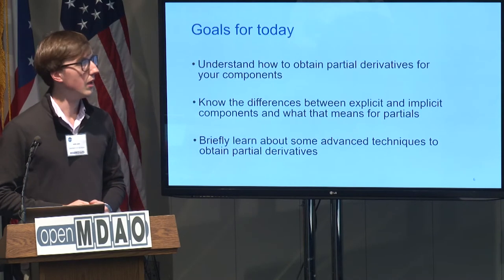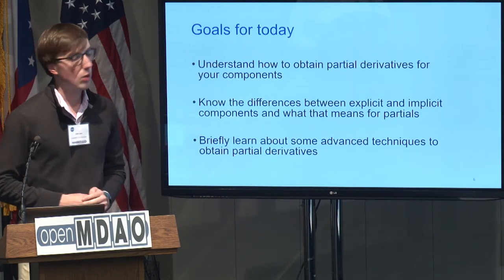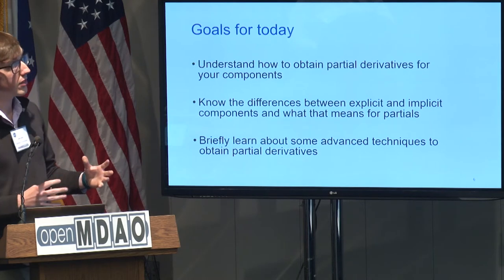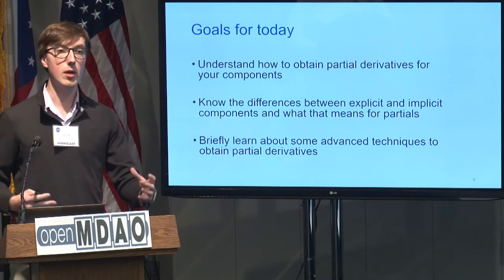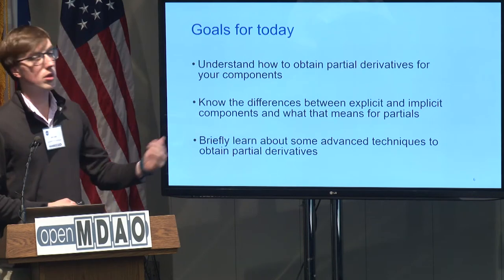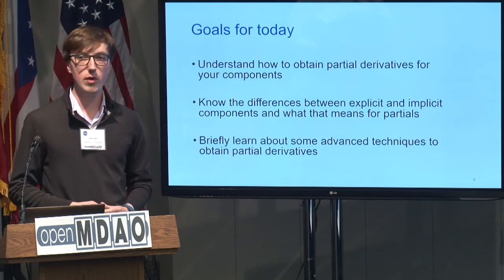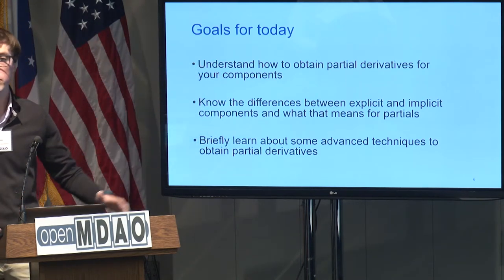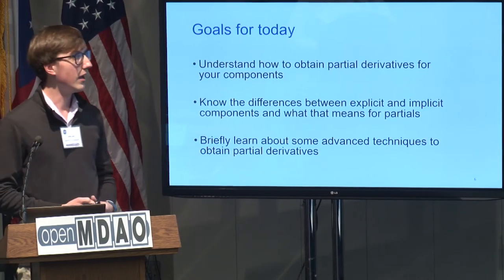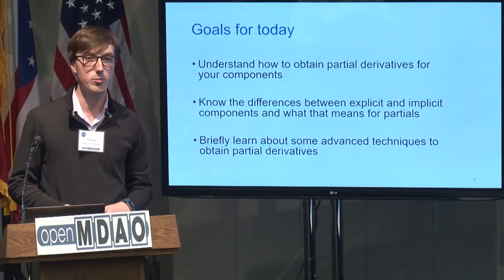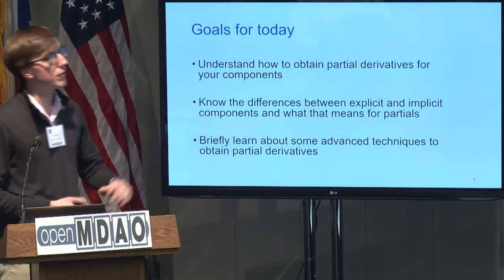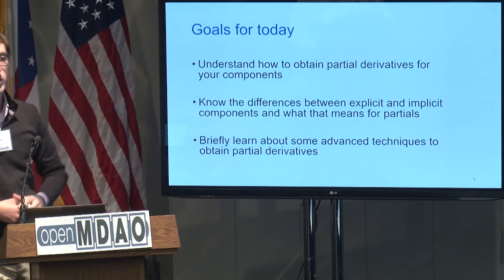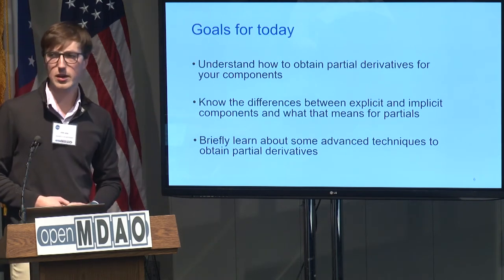Goals for today: we're going to understand how to get partial derivatives for your components and what that means. We'll briefly examine the difference between explicit and implicit components, especially for getting derivatives. Lastly, we'll look at some advanced techniques. Even if you're a seasoned OpenMDAO user, that third bullet should have some interesting nuggets — even I didn't know about all of them until I read the docs.